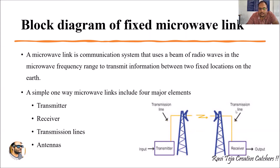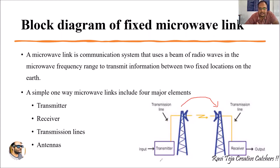We are giving some input — it can be data or information — and this input is given to the transmitter. The transmitter first generates the microwave signal with the desired frequency in order to transmit from the transmitter end to the receiver end. Along with that, this transmitter also modulates the signal.